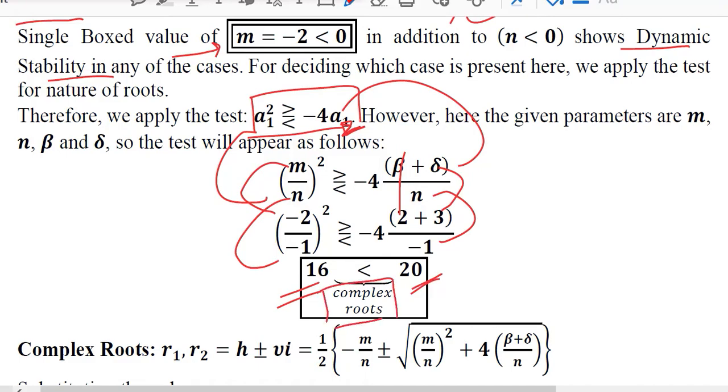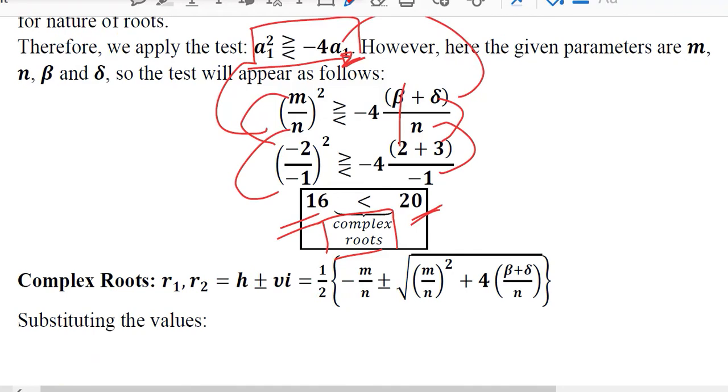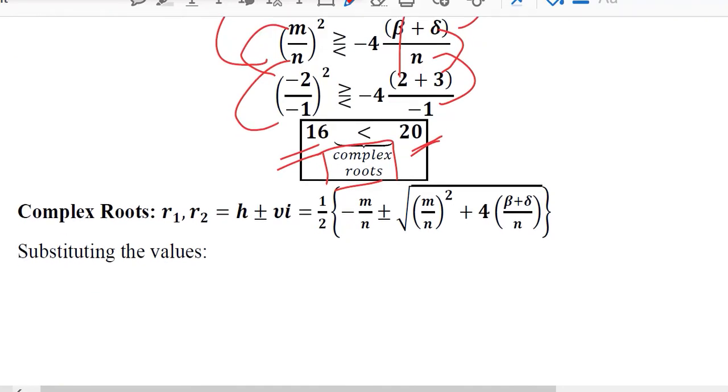So this is 16 on the left hand side and on the right hand side we have 20. So this shows that we have a complex root case. Complex root case is written in this conjugate form.